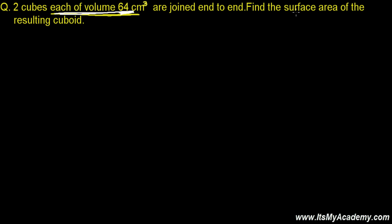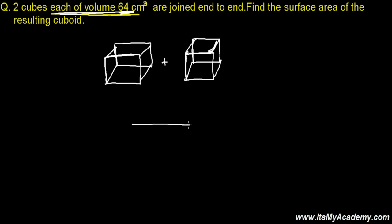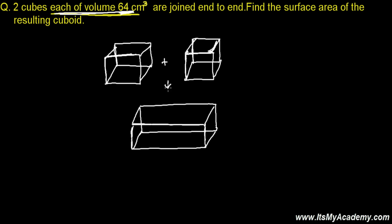They are joined end to end — find the surface area of the resulting cuboid. So we have two cubes. This is my first cube, and we have exactly one more identical cube. What we're going to do is combine both cubes together. After combination, the figure will be something bigger and it will no longer be a cube — now it will be a cuboid.